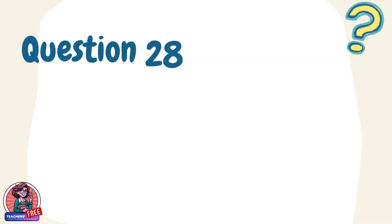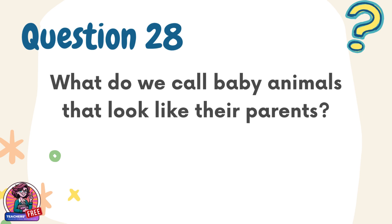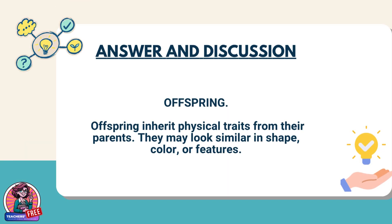Question 28. What do we call baby animals that look like their parents? Answer: Offspring. Offspring inherit physical traits from their parents. They may look similar in shape, color, or features.